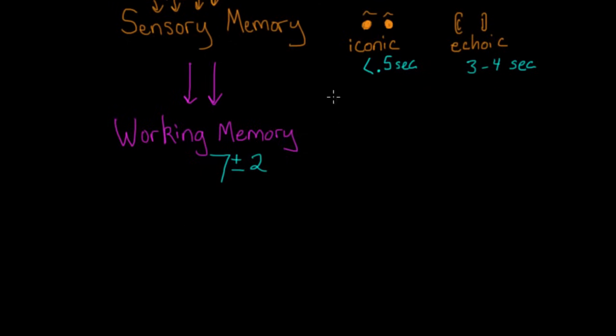But generally, it's right around seven. An interesting fact is that this is actually why phone numbers started out as seven digits long. It was determined that that's as many pieces of information as a person could hold in mind without getting numbers confused or mixing them up.